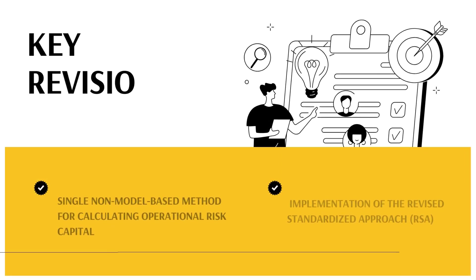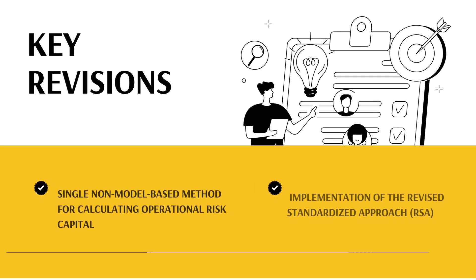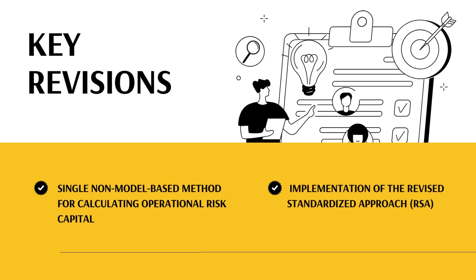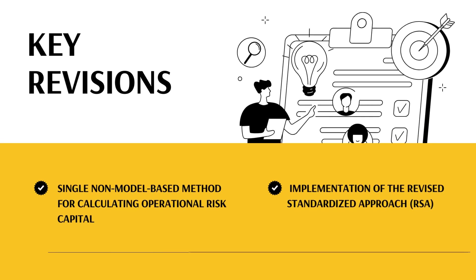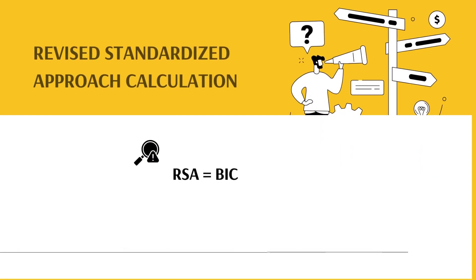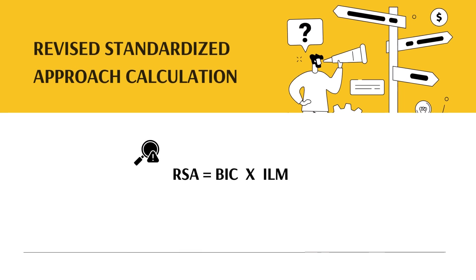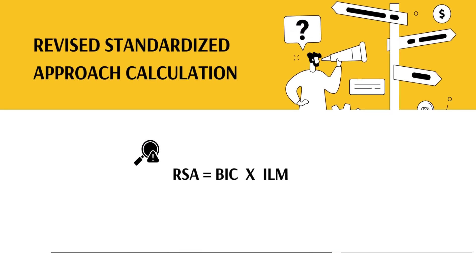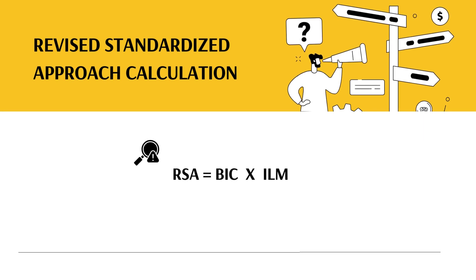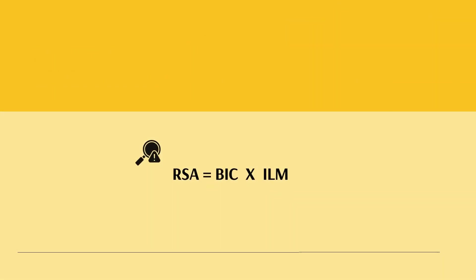Key revisions under Basel IV include the introduction of a single non-model-based method for calculating operational risk capital and the implementation of the revised standardised approach, RSA. The RSA determines capital requirements by multiplying two components: the business indicator component, BIC, and the internal loss multiplier, ILM.